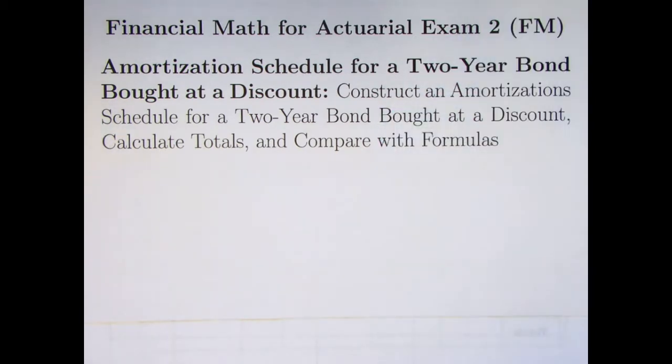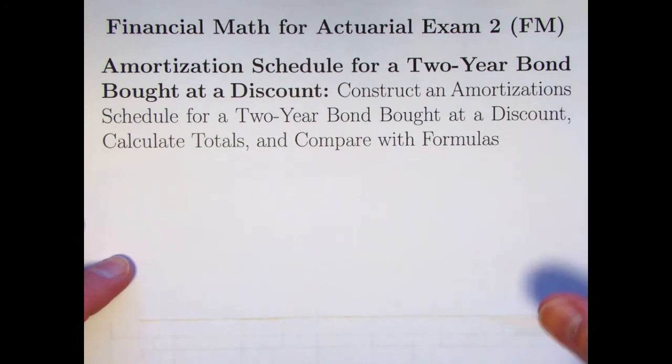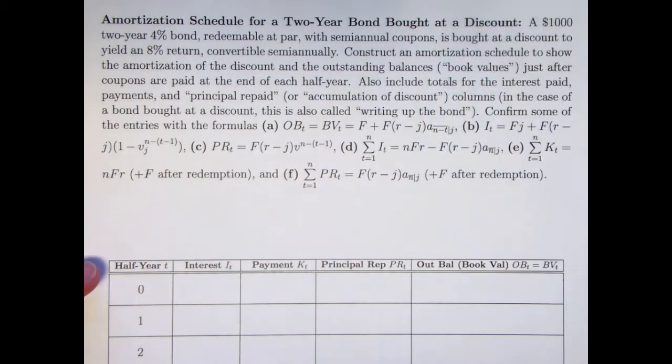On the flip side, when you buy the bond at a discount, when you pay an amount lower than the redemption value, then that sounds good, but your coupon payments are typically lower, especially if the bond is redeemable at par, as most bonds are.